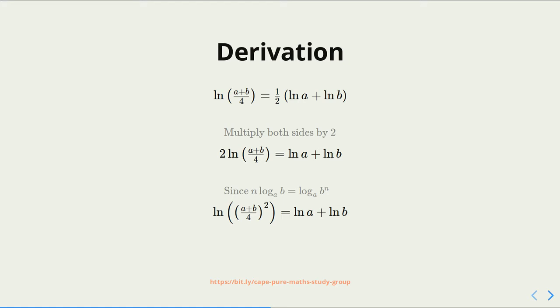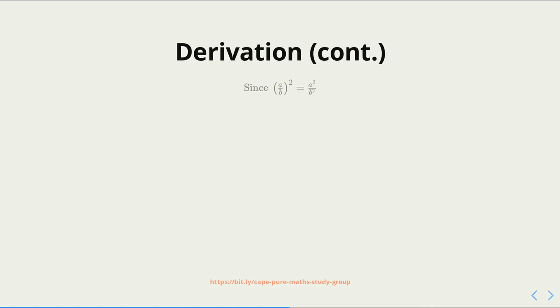Now, (a plus b) on 4, all squared — we can use the result that (a on b) all squared is equal to a squared over b squared to get the natural log of (a plus b) squared over 16 is equal to the natural log of a plus the natural log of b.